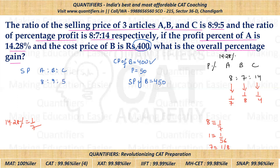Since 9 parts = ₹450, one part = ₹50. Therefore, 8 parts (SP of A) = ₹400, and 5 parts (SP of C) = ₹250. We need the overall profit percentage, so the total selling price = 400 + 450 + 250 = ₹1100.